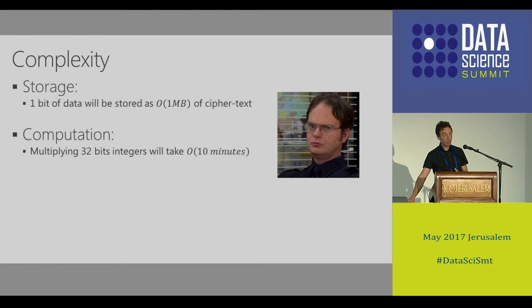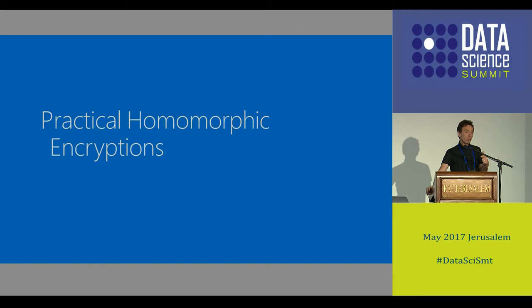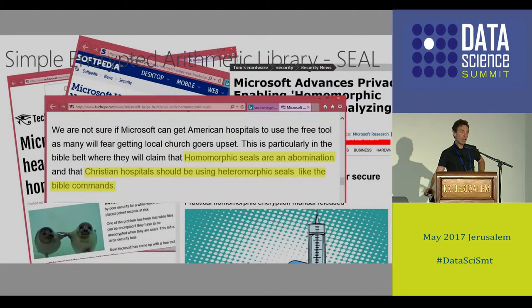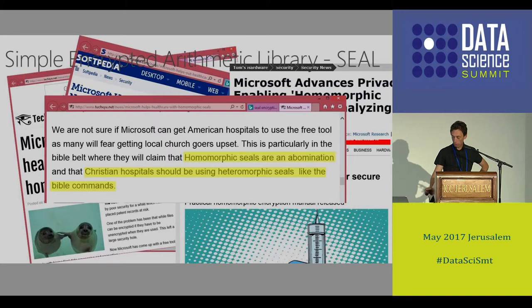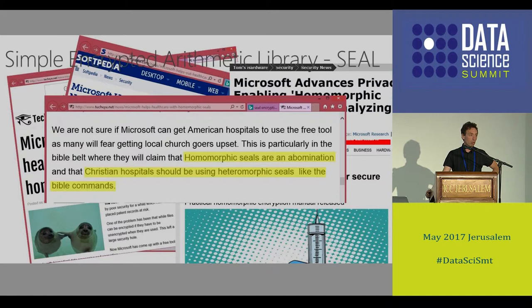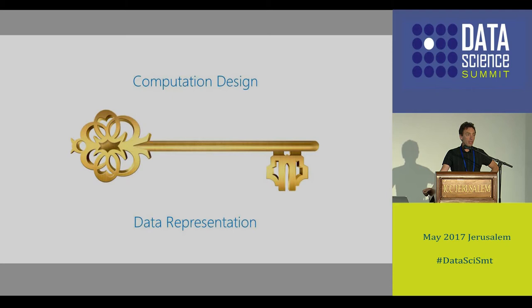We have to talk about practical homomorphic encryption - not just the generic form but how we make it practical. To do that, we built a library we call the Simple Encrypted Arithmetic Library, SEAL. You can download it, it's open source. Some bloggers started writing about it - one of them complained about the use of homomorphic encryption and suggested we should use heteromorphic encryption. Still working on that part. The two keys to making homomorphic encryption practical are: designing your computation carefully, and representing your data well.